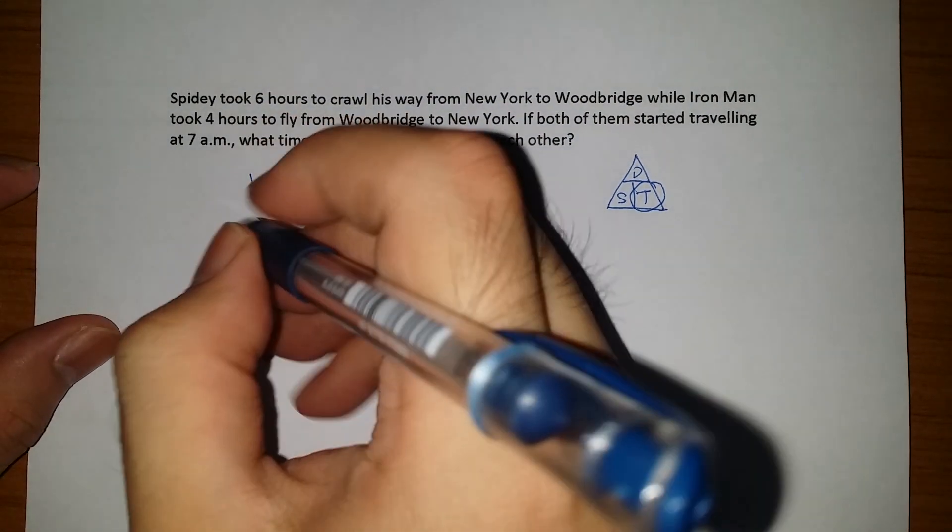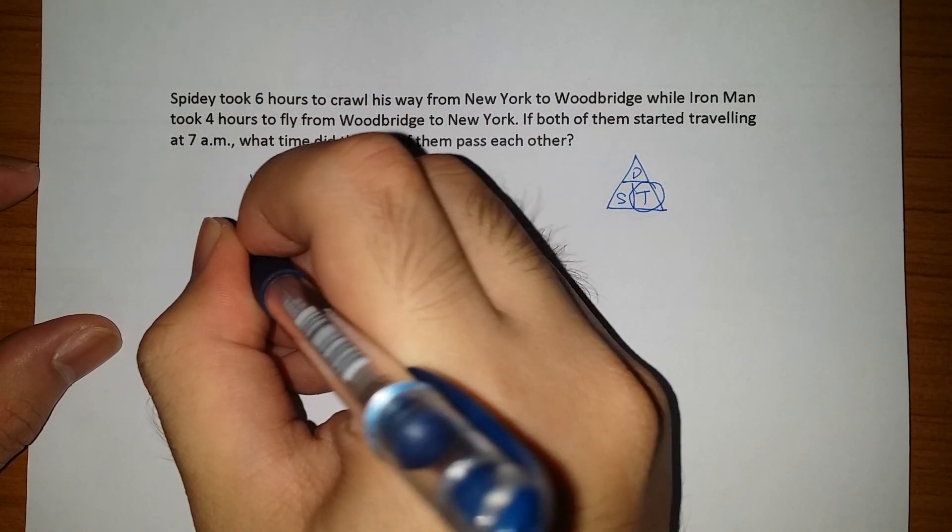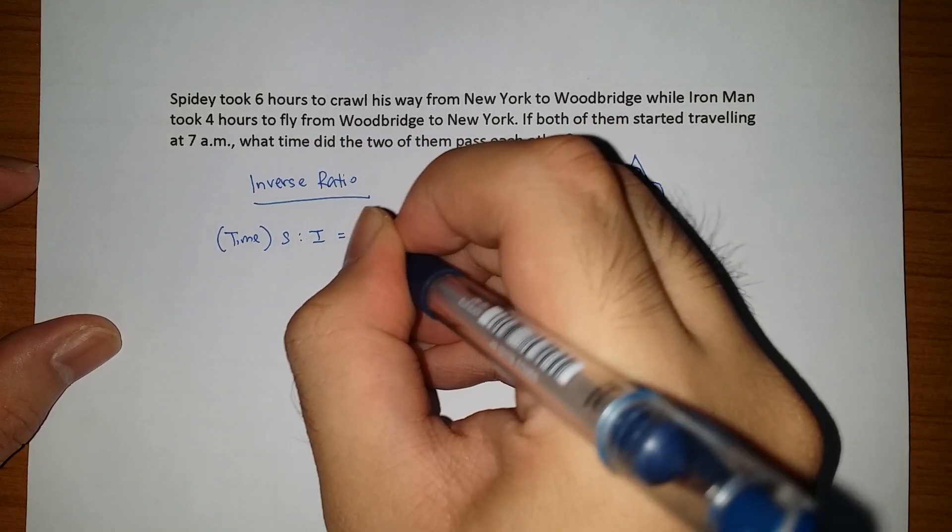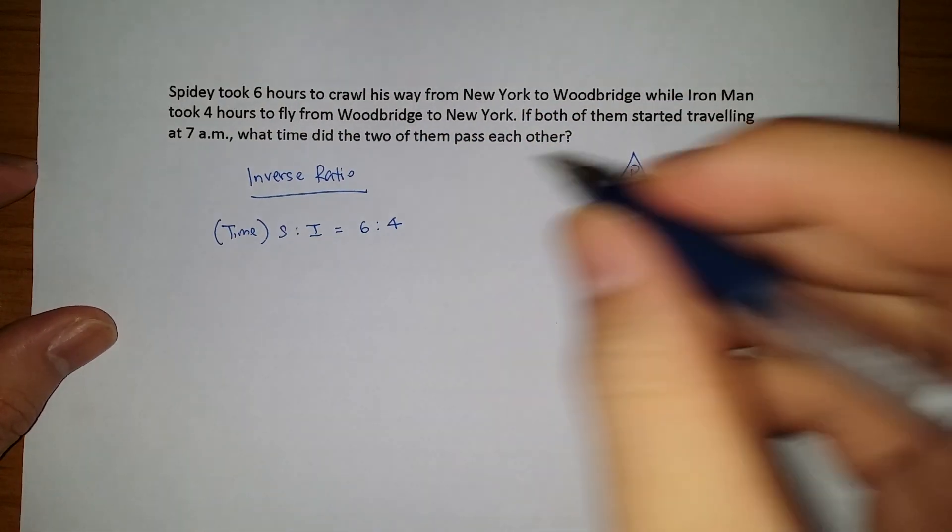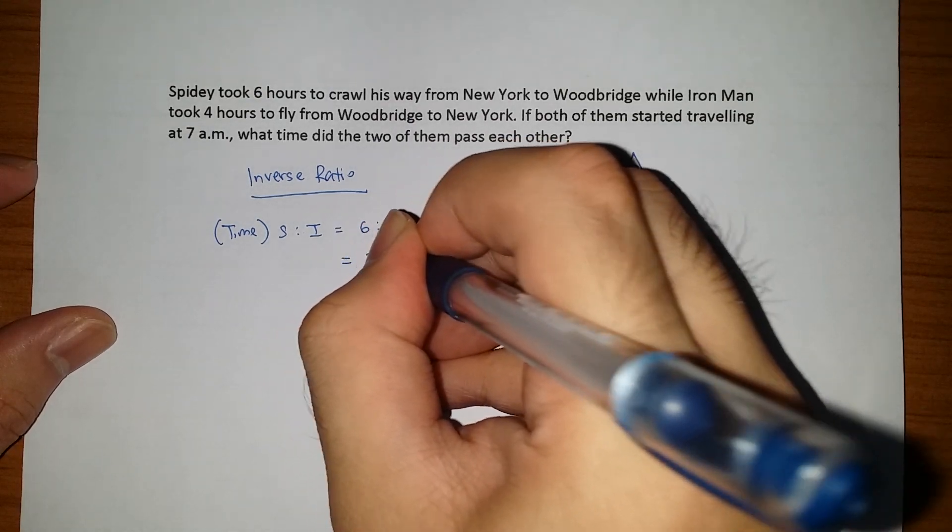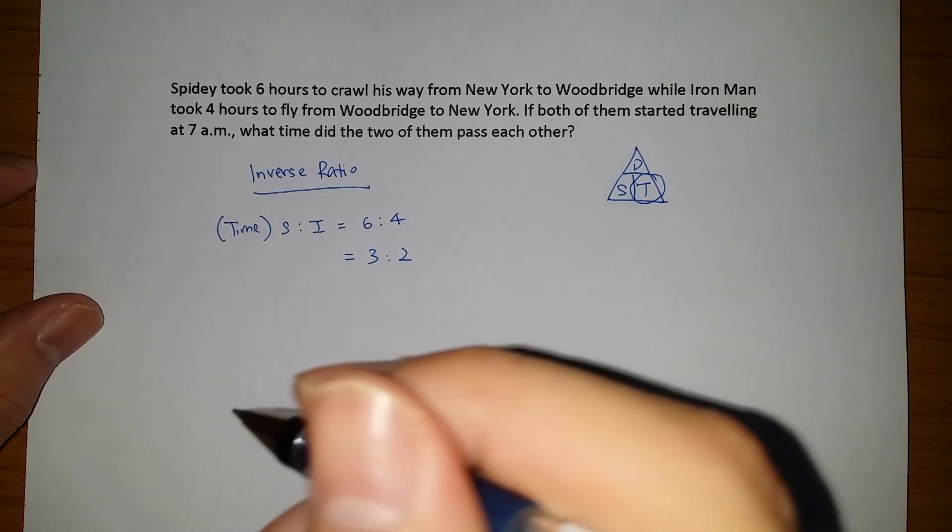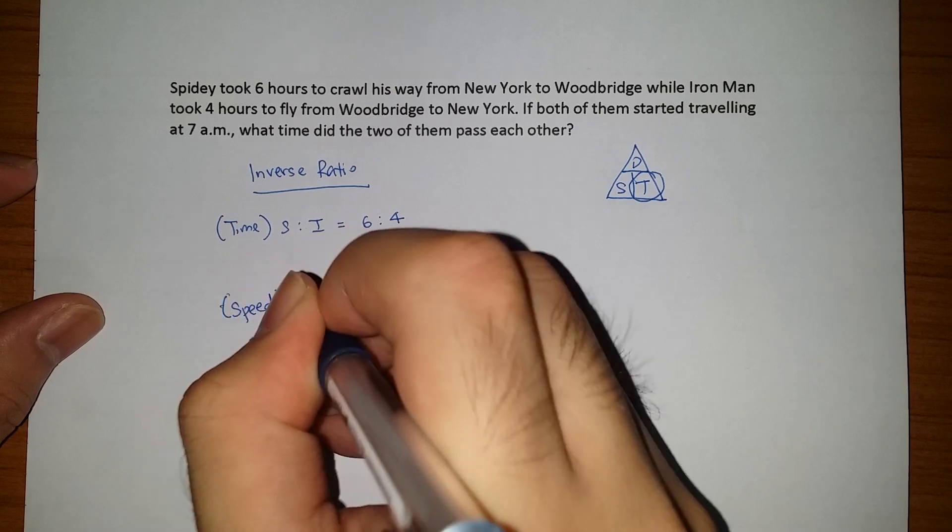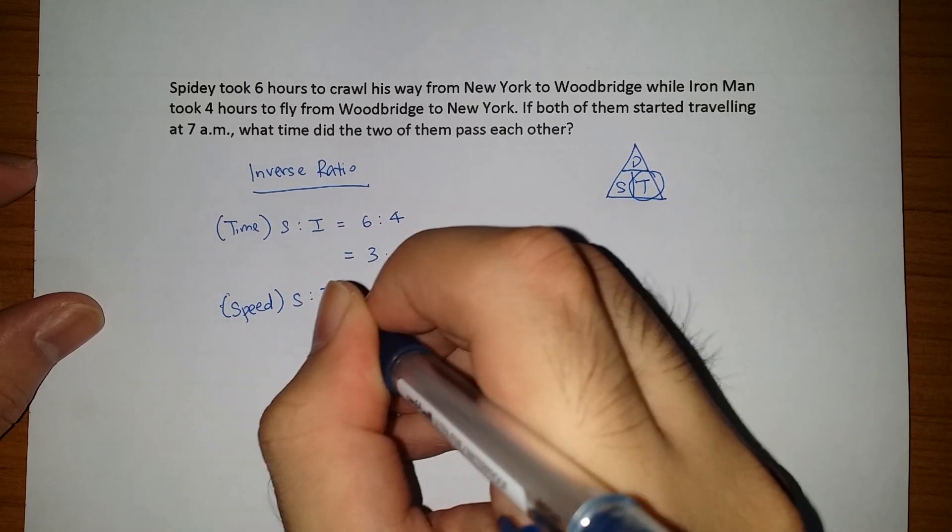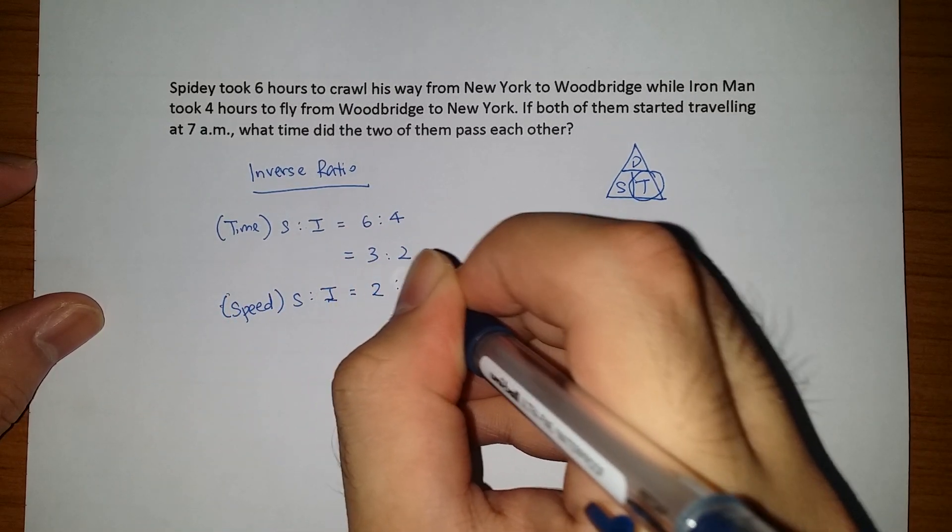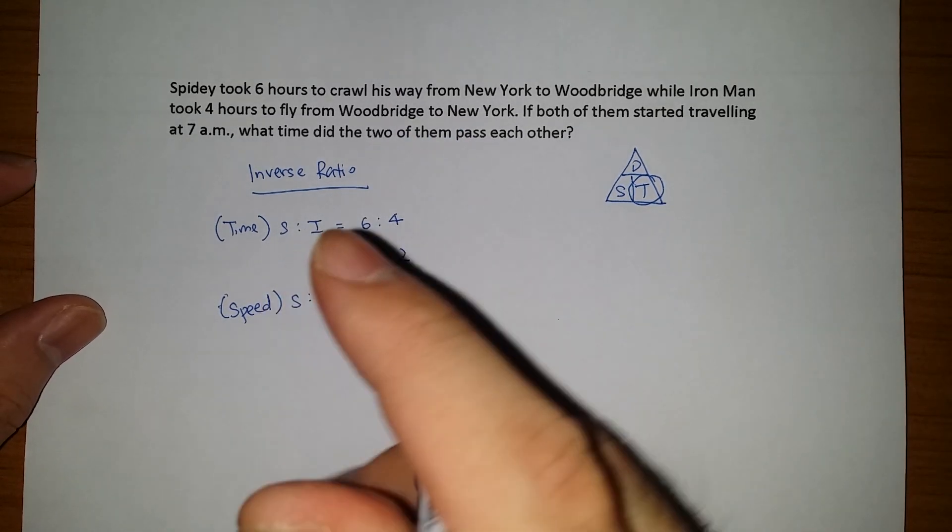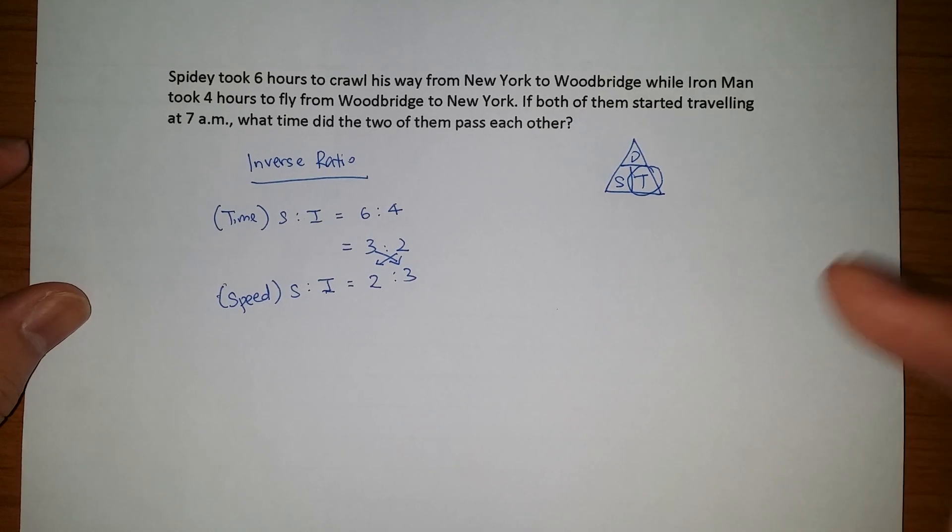So what does this mean is that first, we know that the time ratio taken for Spidey to Iron Man is 6 is to 4. So if we simplify it, we know that it's 3 is to 2. Based on this ratio, I can find out the speed ratio for Spidey and Iron Man. And the trick here is to inverse it. So I make a switch in the position, and I realize that the speed ratio is 2 is to 3.